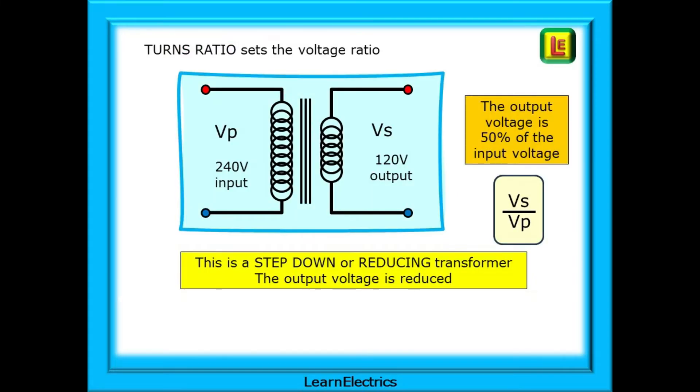The turns ratio sets the voltage ratio input to output and the formula is VS over VP. In our example VP is the primary voltage. The primary voltage is 240 volts and 50% of this is 120 volts, the output voltage. Because the output voltage is less than the input we call this a reducing transformer. The output voltage is reduced.